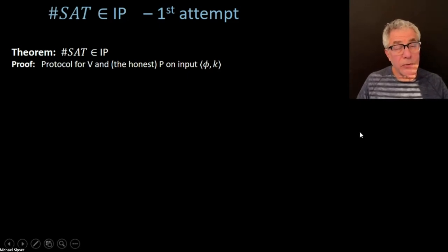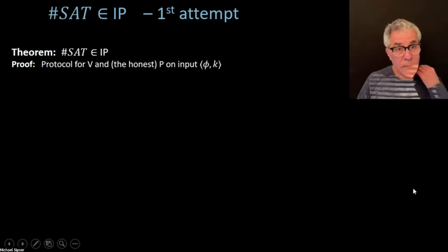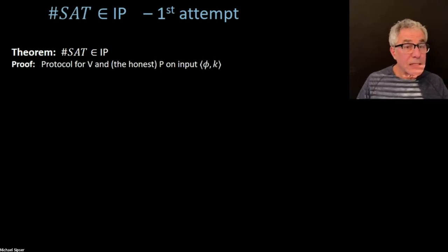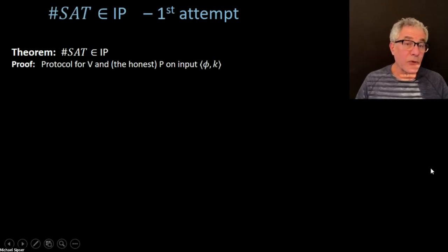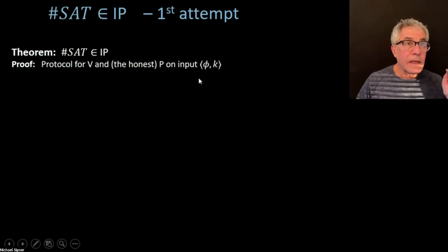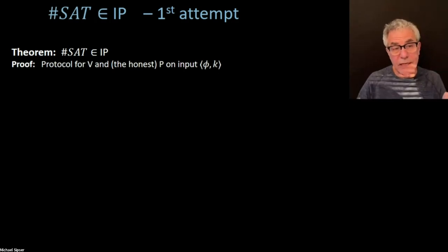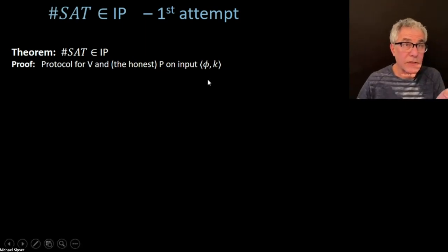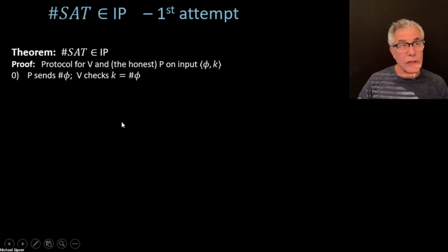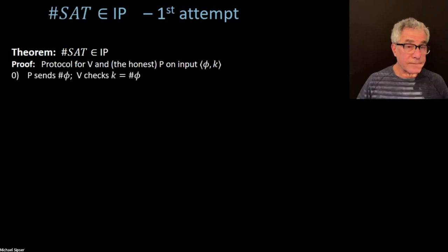So with that knowledge, let's try to see how we can put number set in IP. This is not going to quite work, but it's really going to set us up to finish this next time. You might immediately see where this is going wrong, but you'll have to put up with it — the setup is what's important. The input is a formula and a number, where that number is supposed to be the number of satisfying assignments. It could be wrong, in which case we're not in the language, but if it's right, you're in the language. The prover is supposed to convince the verifier that it's correct if it is correct, and it's going to fail no matter what it tries to do if it's not correct.